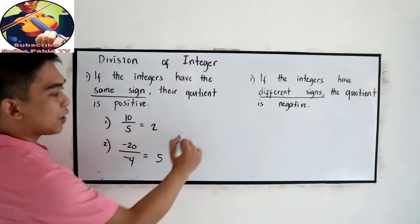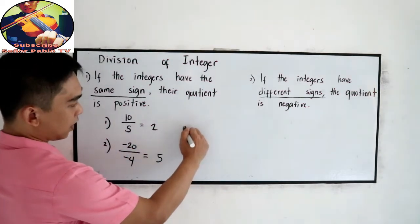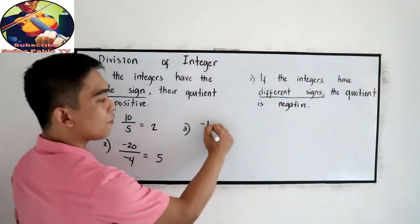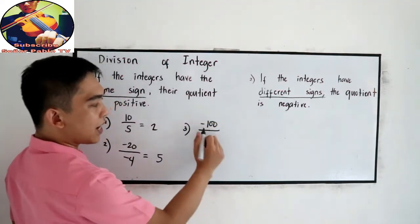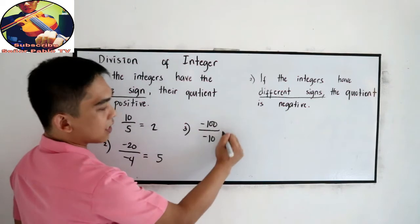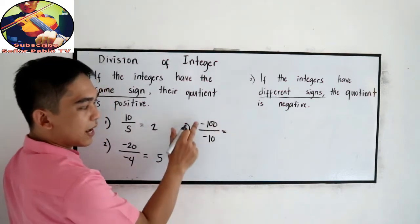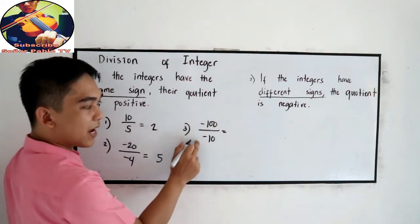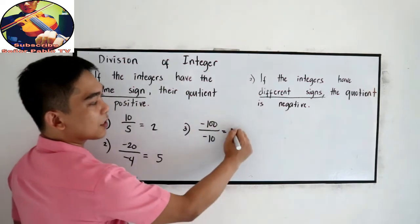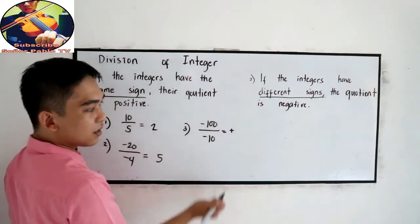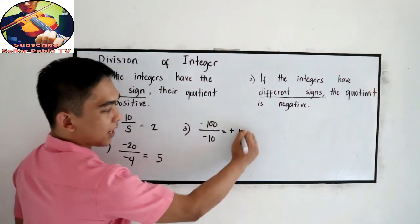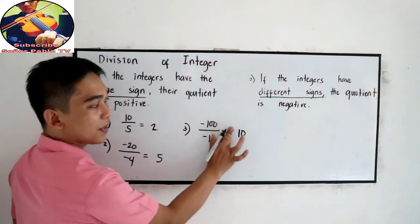Another one: negative 100 divided by negative 10. Negative divided by negative, so they have the same sign, so that is positive. 100 divided by 10 is positive 10.